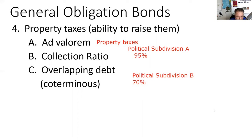We're not going to make you crunch that on the exam — we just want you to know that's a term that goes with general obligation bonds. Most of the time when you see a collection ratio, you might think it goes to a revenue bond — no, it goes to a GO bond.